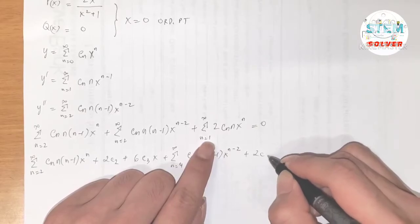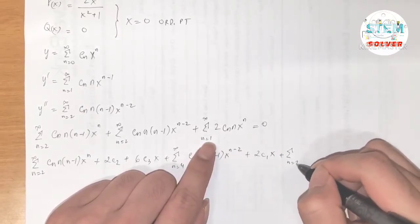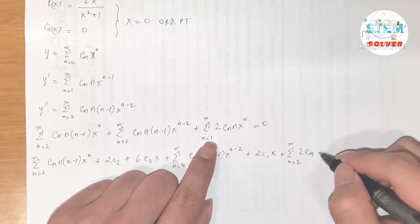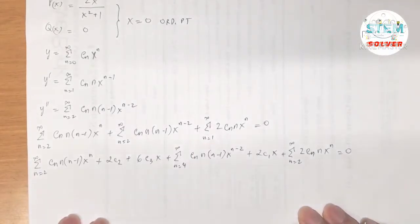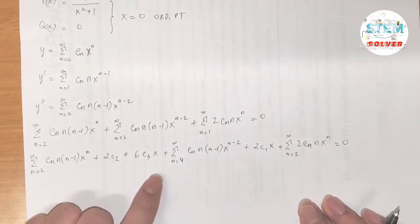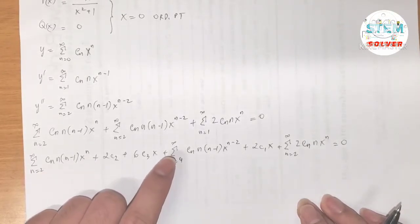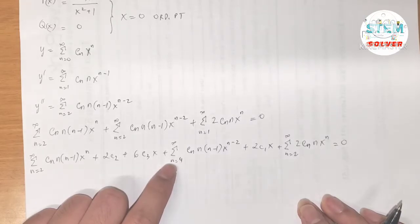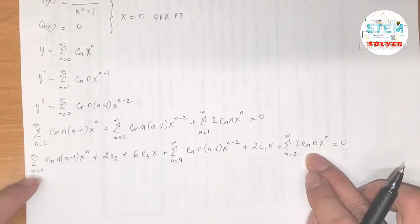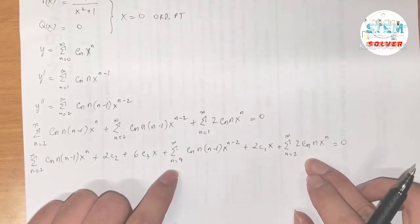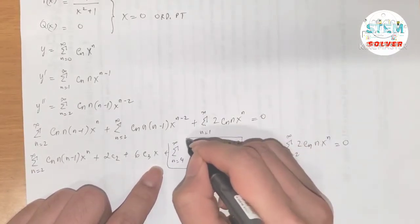For the last series: n=1 gives 2c₁·x, plus Σ 2cₙ·n·xⁿ from n=2 to ∞, all equal to zero. Now looking at the indices: we have n starting at 2, 4, and 2. We need to re-index n=4 to n=2. I won't re-index the other series since it takes more time to re-index two series instead of one.